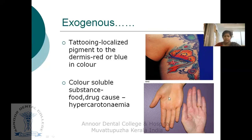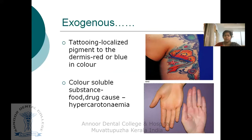Another type of exogenous pigmentation is hypercarotinemia. This can occur on the dermis or over the oral mucosa, and is mainly from food or drugs. In the palms, you can see the color variation associated with this condition.